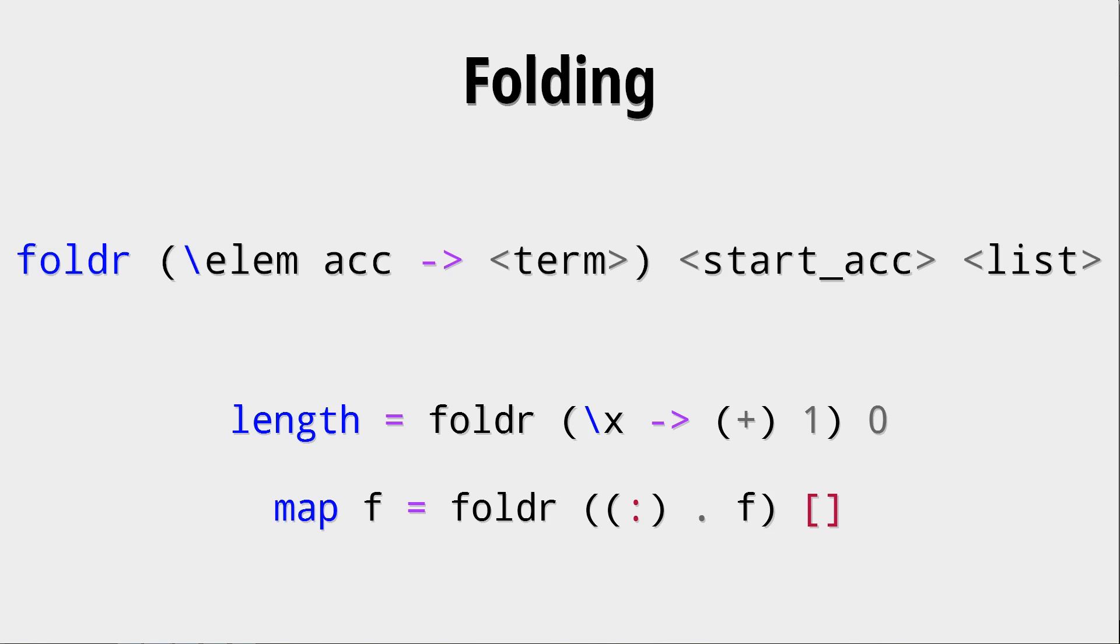So we see here, for example, with the fold r in length, we ignore the x that we get and simply increment the accumulator, done with partial function application.